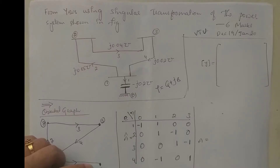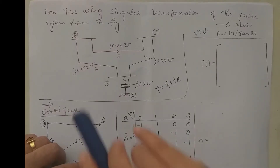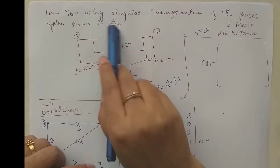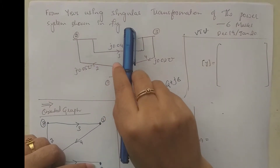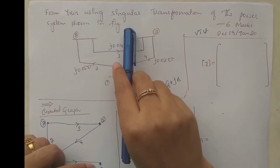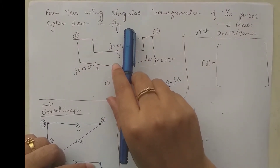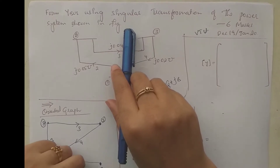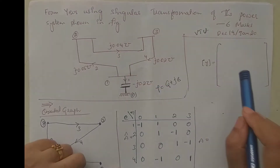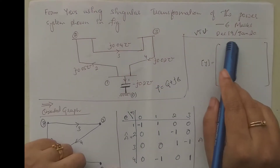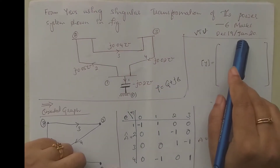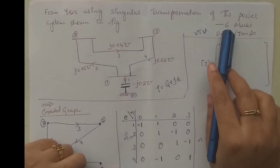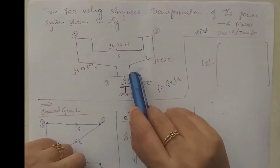Hello students. We will solve some more problems under formation of Y-bus using singular transformation method of Model 1, PSA2. This is asked in V2 December 19 question paper for 6 marks. This is the network given.